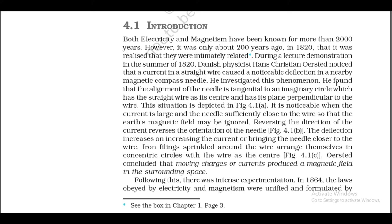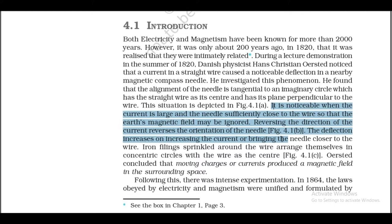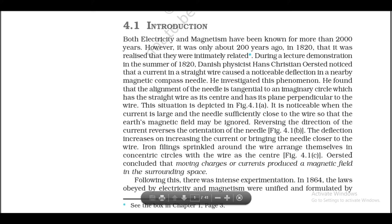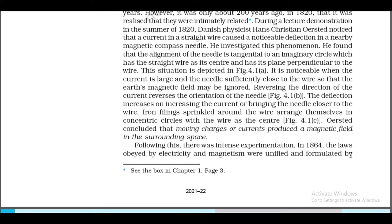He investigated this phenomenon and found that the alignment of the needle is tangential to an imaginary circle which has the straight wire as its center and has its plane perpendicular to the wire. This situation is depicted in figure 4.1a. It is noticeable when the current is large and the needle is sufficiently close to the wire so that the Earth's magnetic field may be ignored. Reversing the direction of the current reverses the orientation of the needle (figure 4.1b). The deflection increases on increasing the current or bringing the needle closer to the wire. Iron fillings sprinkled around the wire arrange themselves in concentric circles with the wire as the center.